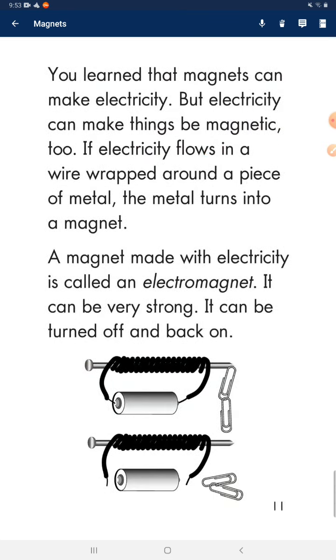You learned that magnets can make electricity, but electricity can make things be magnetic, too. If electricity flows in a wire wrapped around a piece of metal, the metal turns into a magnet. A magnet made with electricity is called an electromagnet. It can be very strong. It can be turned off and back on.